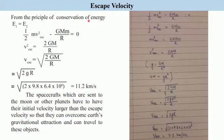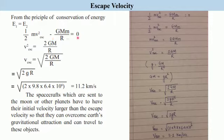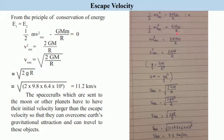From the principle of conservation of energy, E1 equals E2. That is, the energy possessed by the object on Earth should equal the energy possessed by the object at infinity. Substituting the values: ½mv²_escape = GMm/R, since we shift −GMm/R to the other side and it becomes GMm/R.